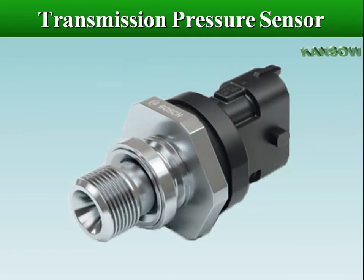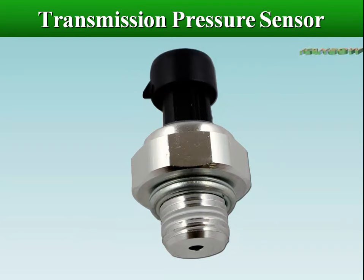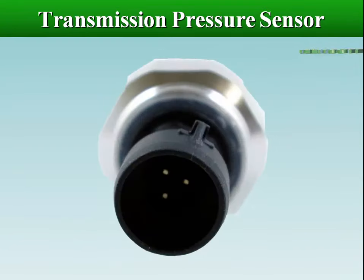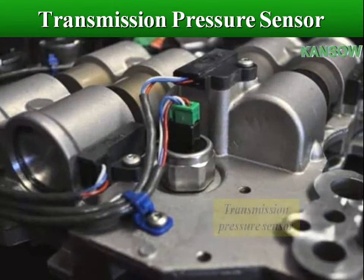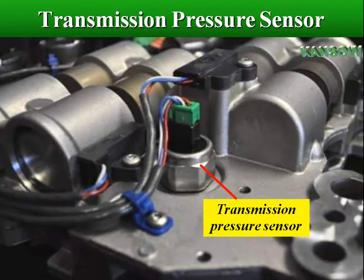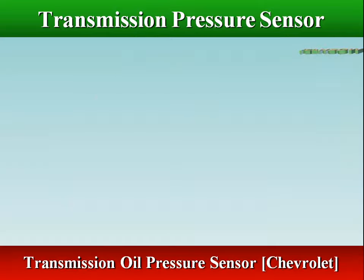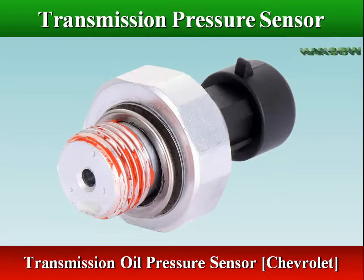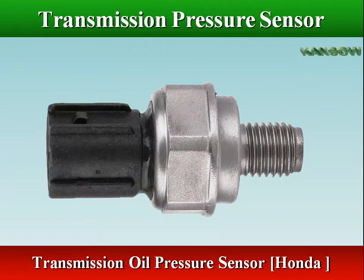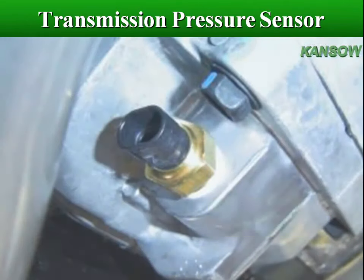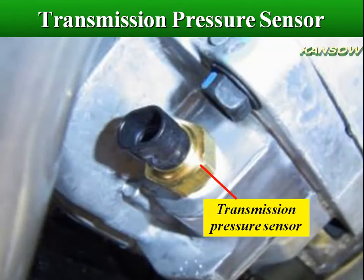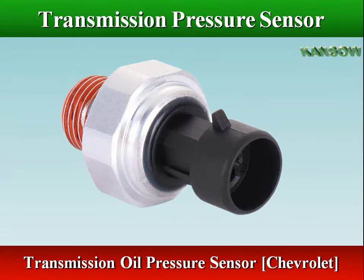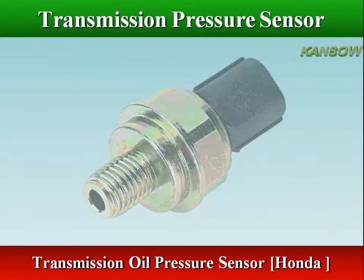The transmission pressure sensor measures the hydraulic oil pressure in different transmission applications and helps determine the shifting pressure precisely and reliably. Different plug and hydraulic connections are possible, and the sensor may be mounted inside or outside the transmission. It is usually found attached to the side of the valve body inside the transmission, although sometimes it may be found screwed into the side of the transmission case itself.